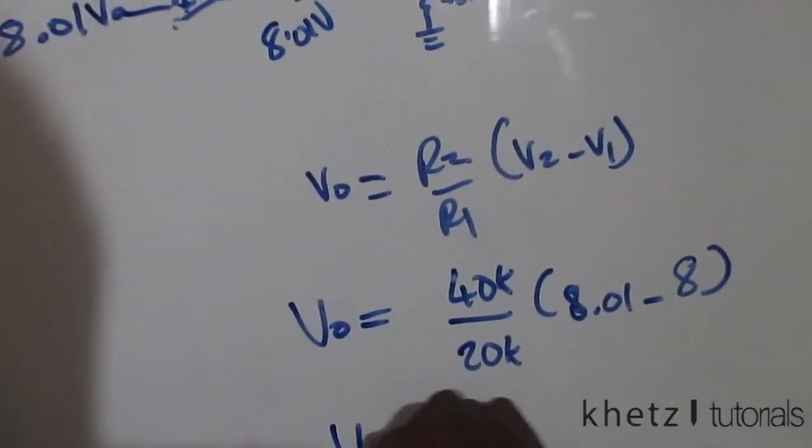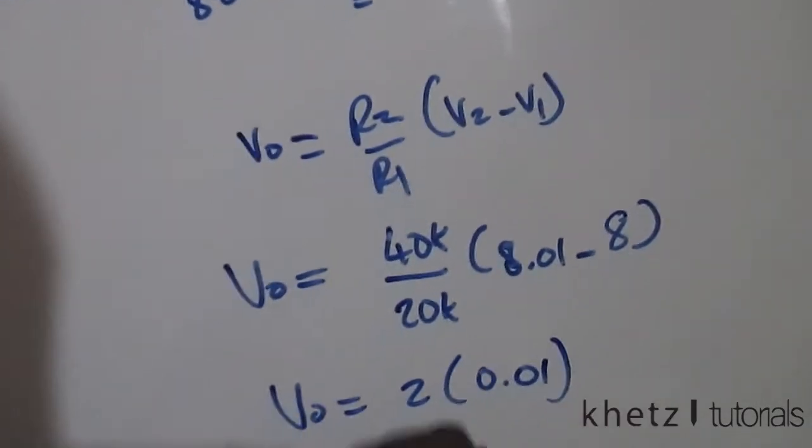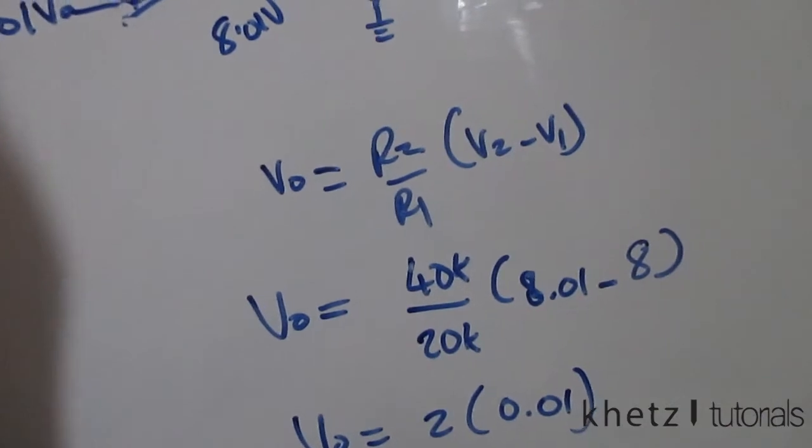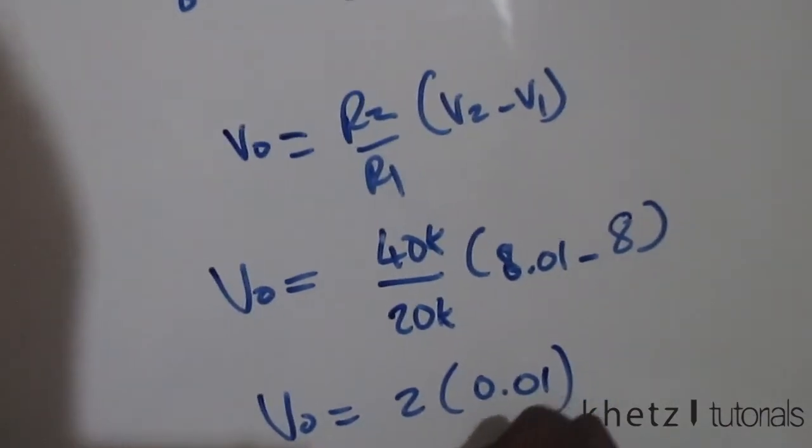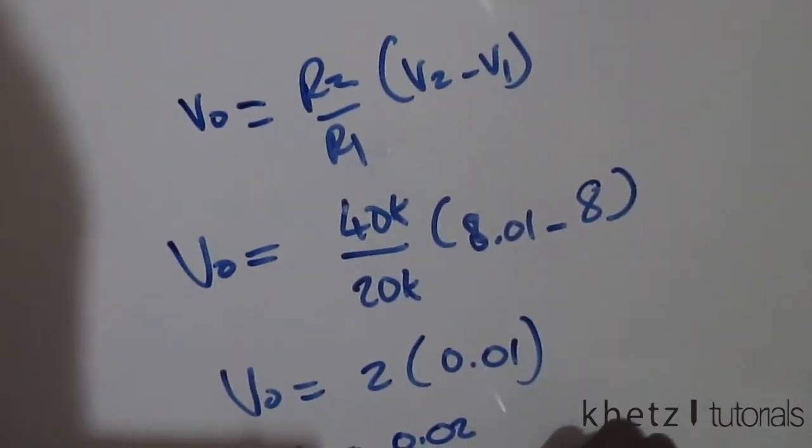Vo equals 2, so Vo equals 2 multiplied by 0.01, which gives you Vo equals 0.02, which is equivalent to 20 times 10 to the minus 3. That is your value for Vo.